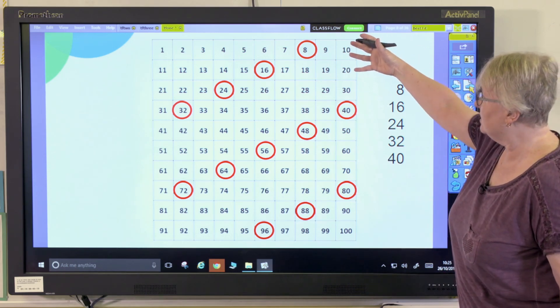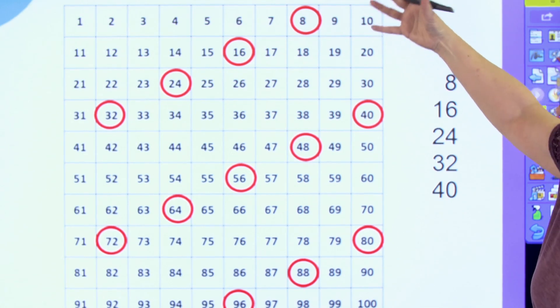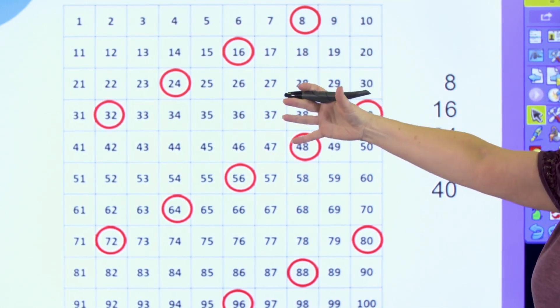I can then also look at my ones and they're going back in twos, eight, six, four, two.